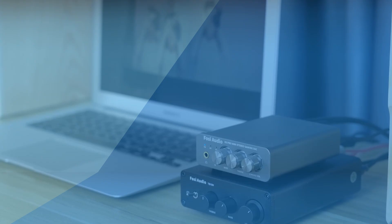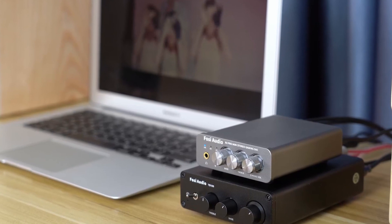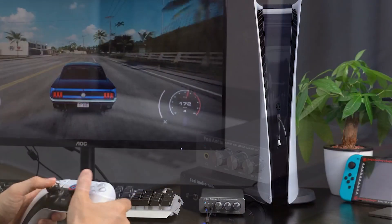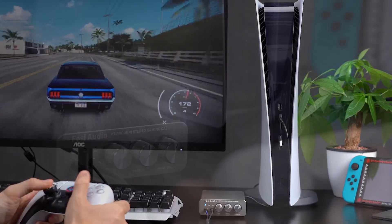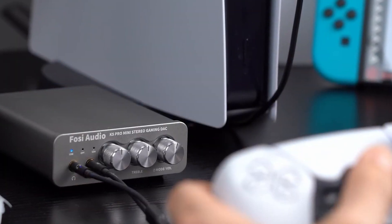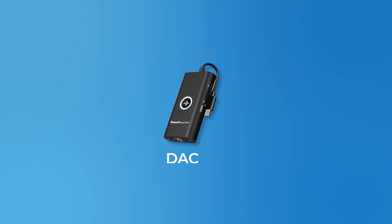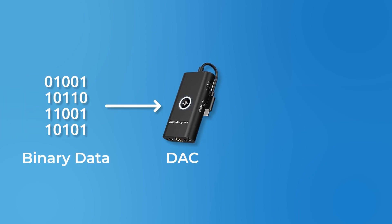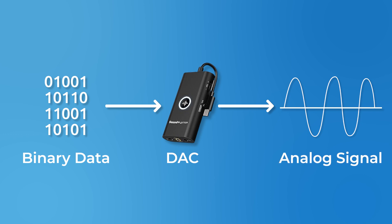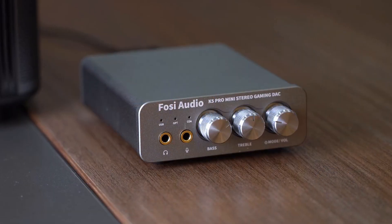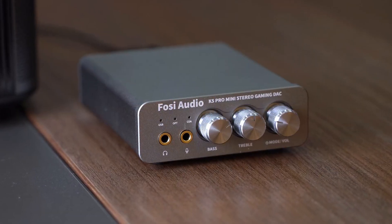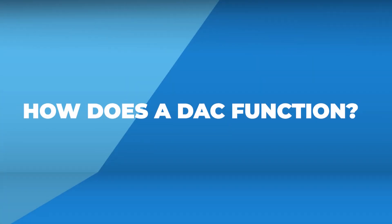What is a DAC? You might have heard the term DAC thrown around in conversations about audio quality, but what exactly is it? A DAC, or digital-to-analog converter, is like the bridge between the digital and analog worlds. It's a little electronic wizard that takes binary data — the ones and zeros — and turns them into continuous physical signals like voltage or current, which are then used by our devices or perceived by our senses.